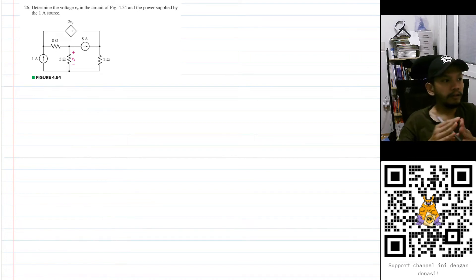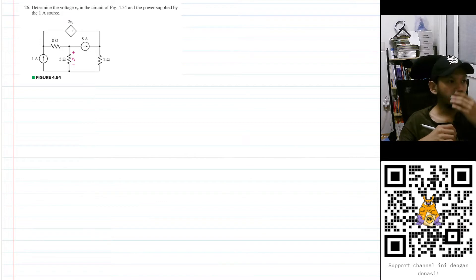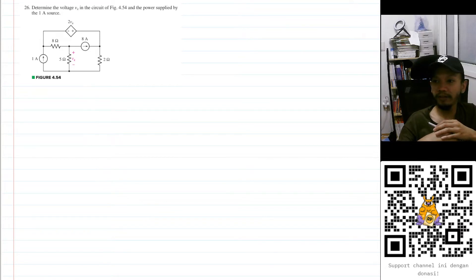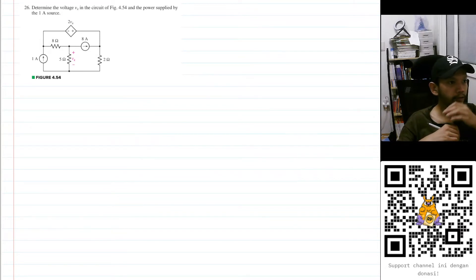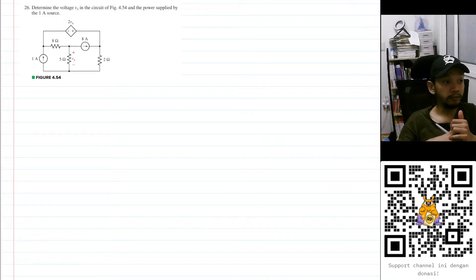Hello, my name is RD and we are going to solve problem 26 from chapter 4 of the textbook: determine the voltage Vx in the circuit of figure 4.54 and the power supplied by the 1 ampere source.